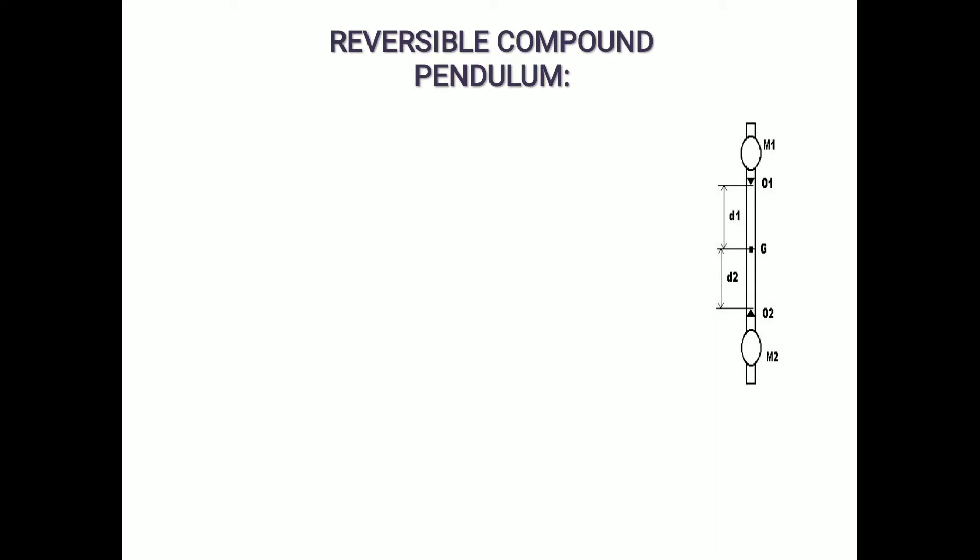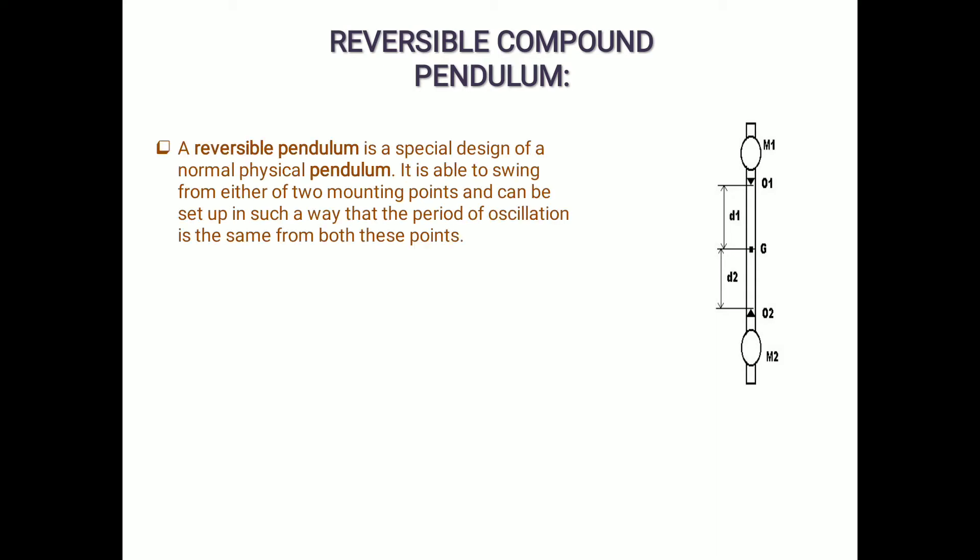Here is a diagrammatic representation of the compound pendulum. A reversible compound pendulum is a special design of a normal physical pendulum. This type of pendulum is able to swing from either of two mounting points, and it can be set up so that the period of oscillation is the same from both points.